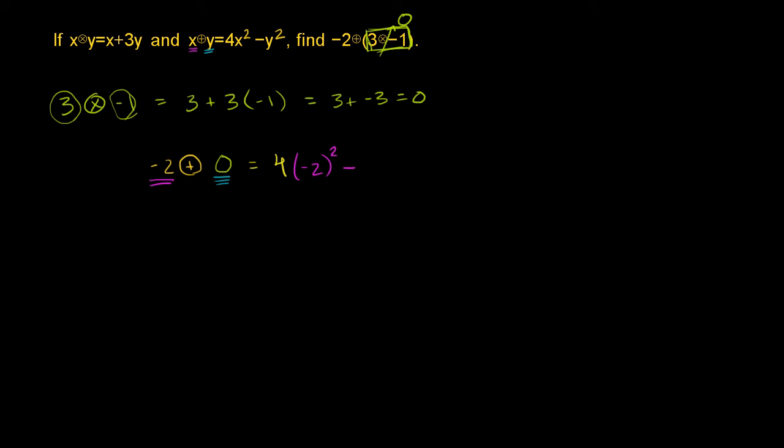Y is 0, so minus 0 squared. 0 squared is just 0, so this simplifies to 4 times negative 2 squared. Negative 2 squared is positive 4, so 4 times 4 equals 16. We're done.